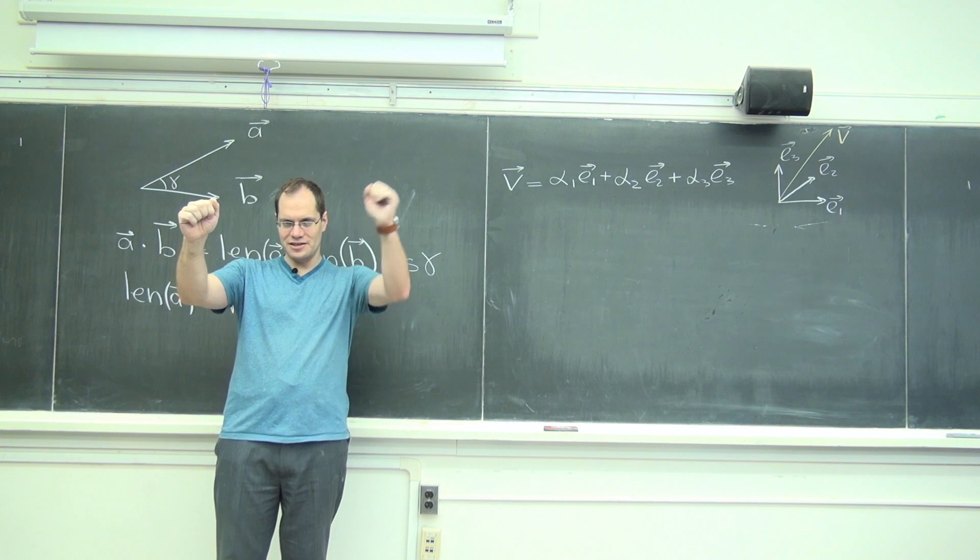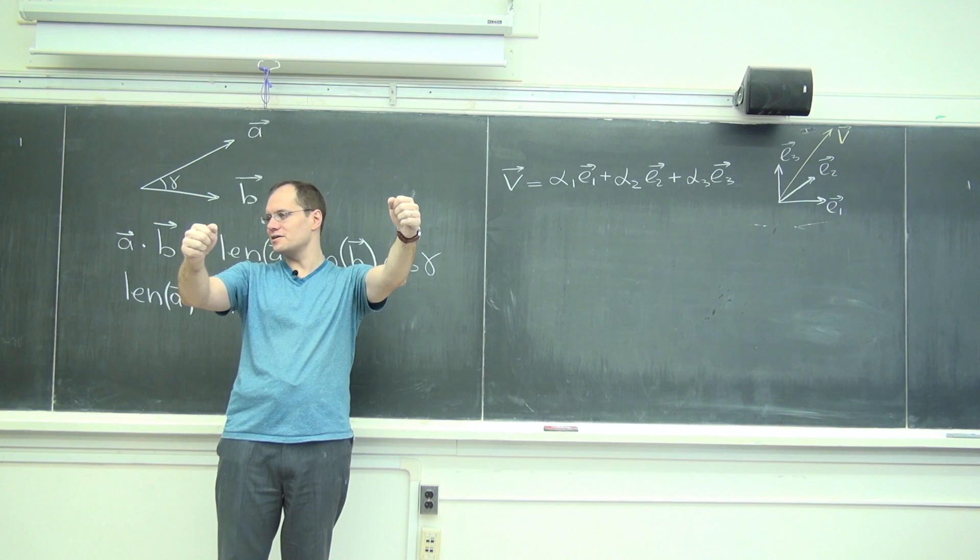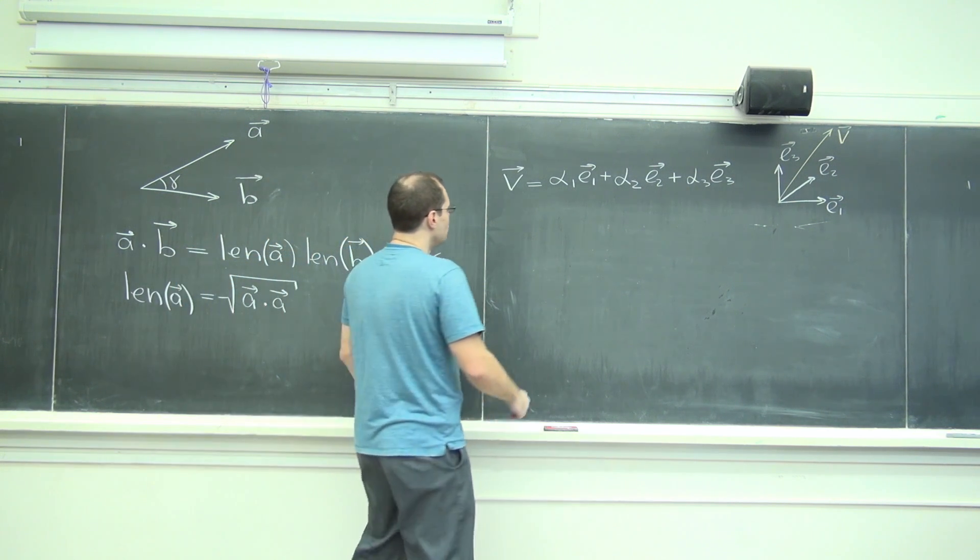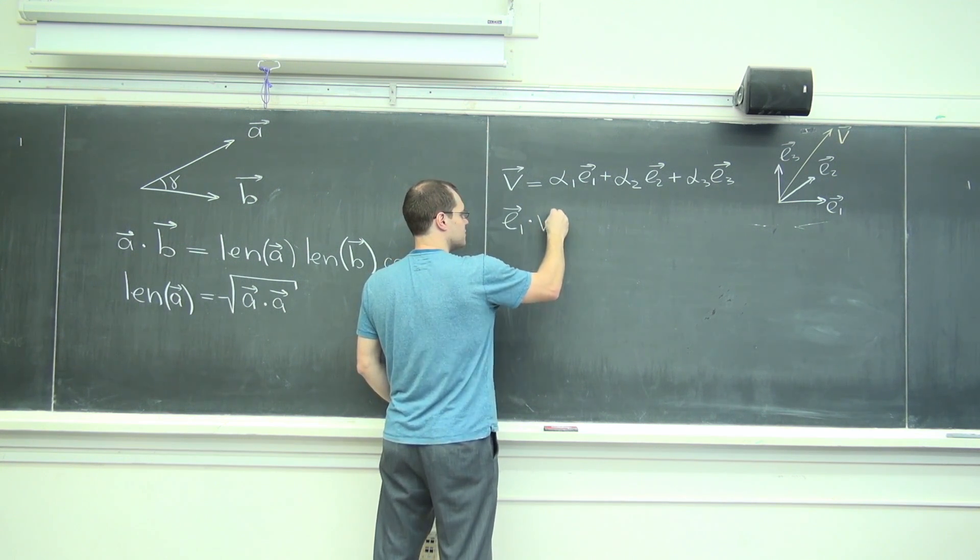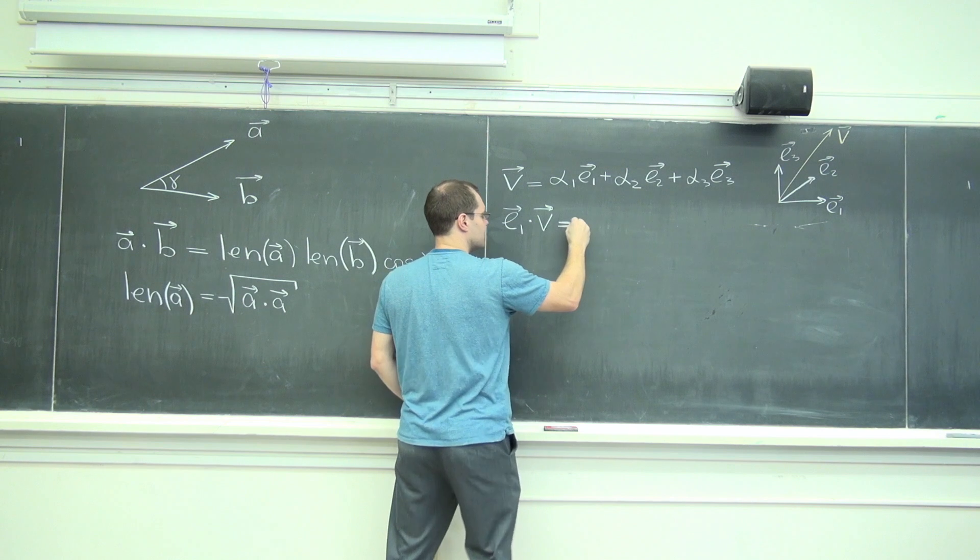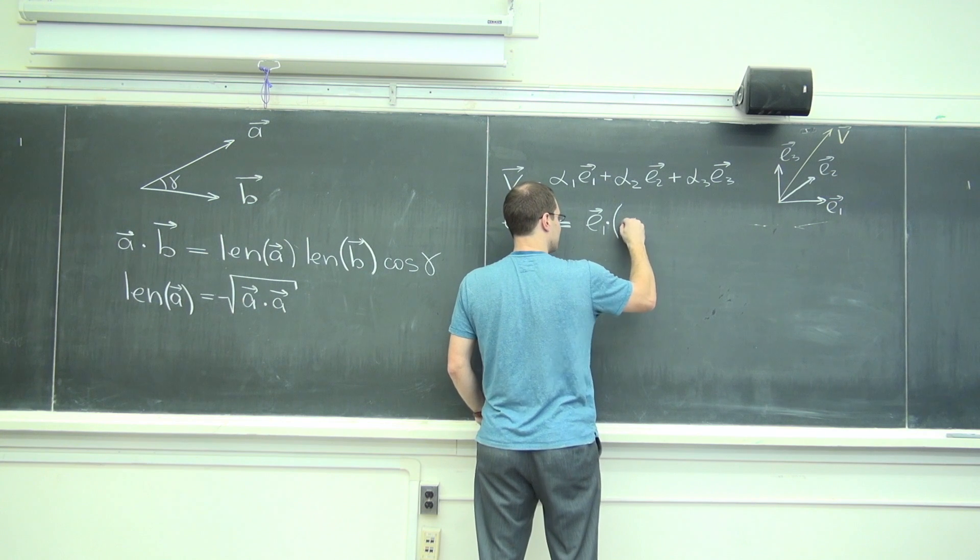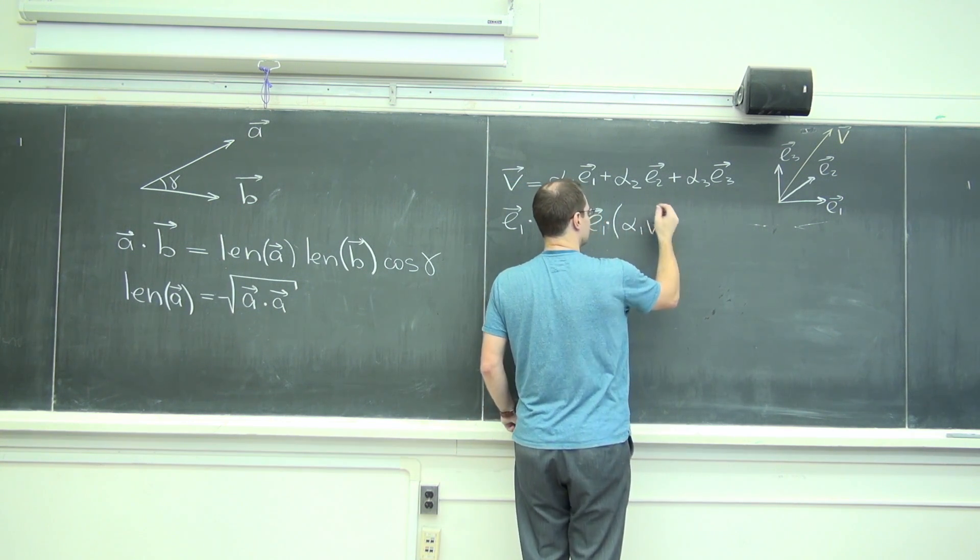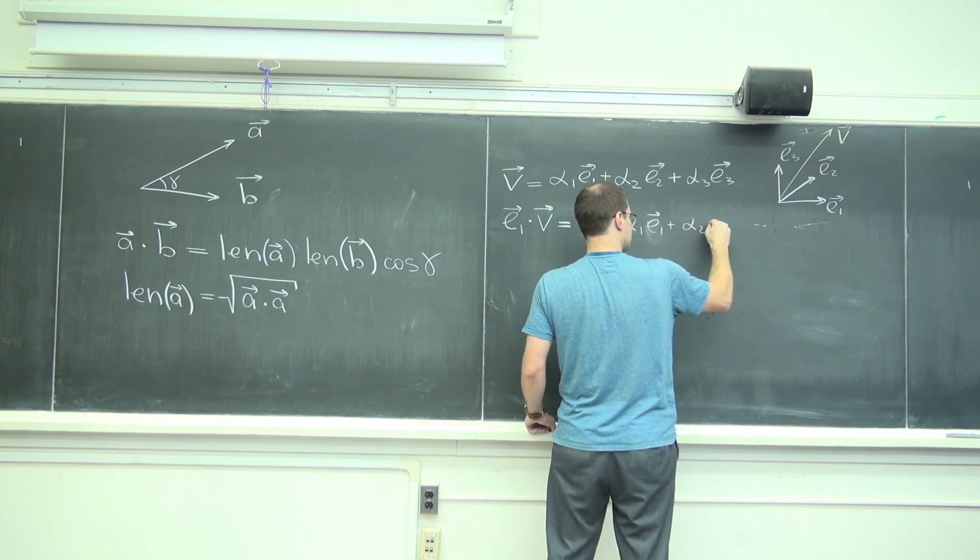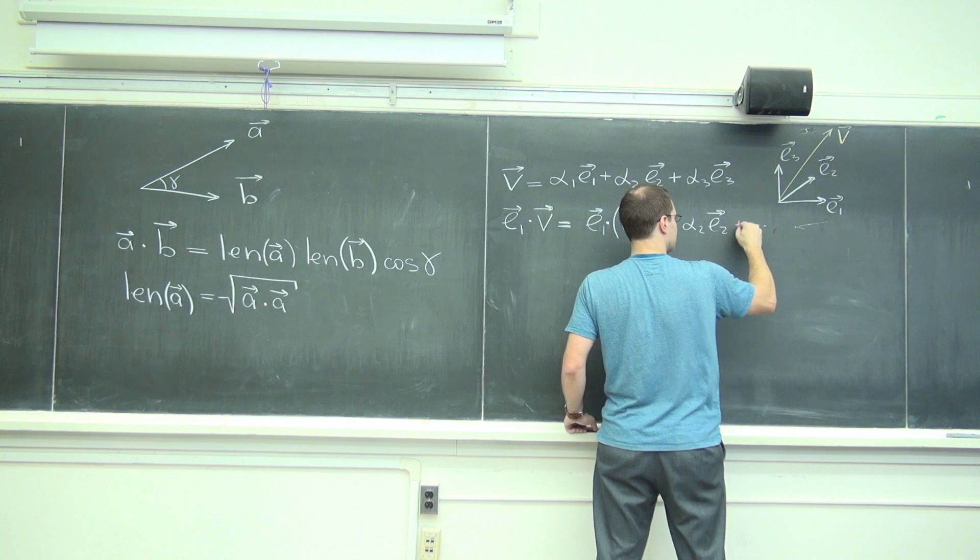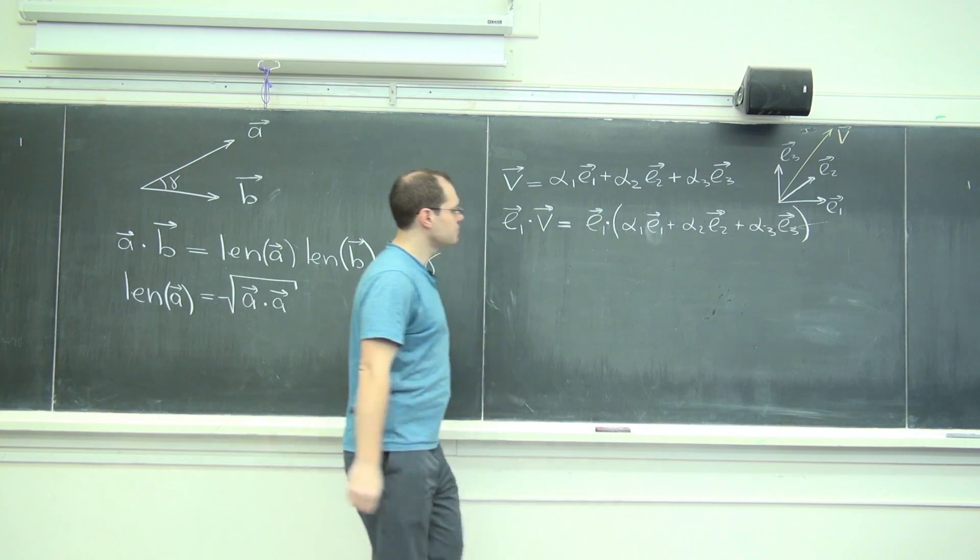If one vector equals another, then this vector dotted with E1 will equal this vector dotted with E1. So E1 dotted with V equals E1 dotted with alpha 1 E1 plus alpha 2 E2 plus alpha 3 E3.